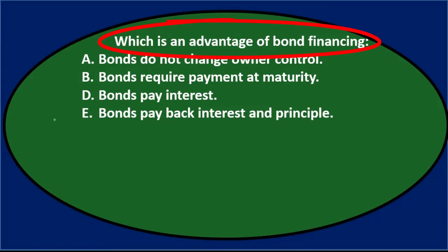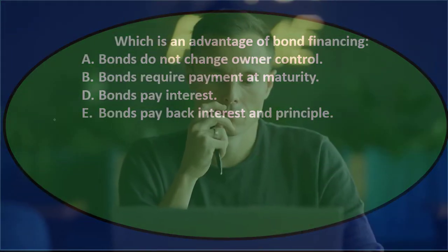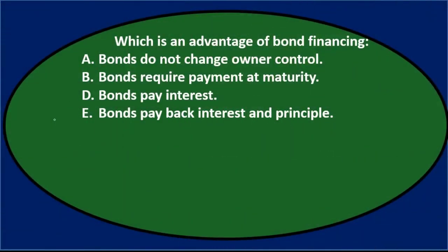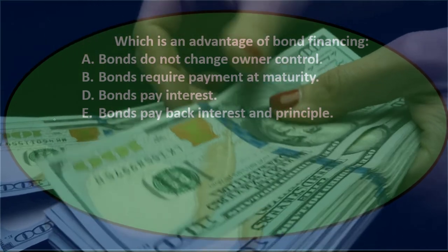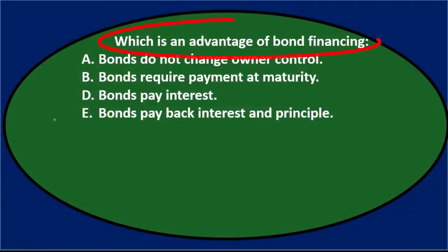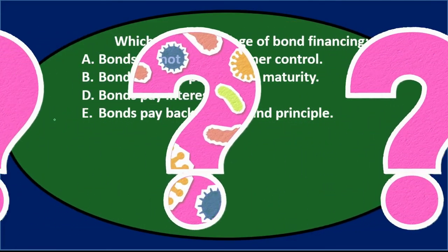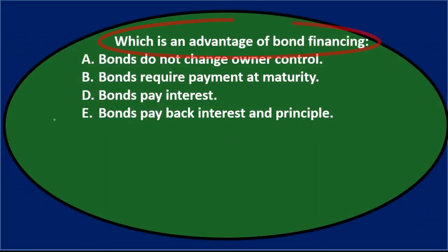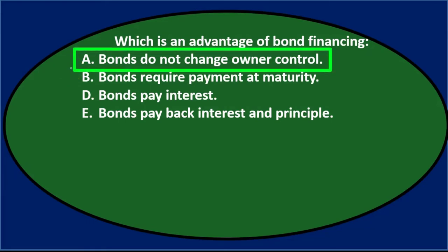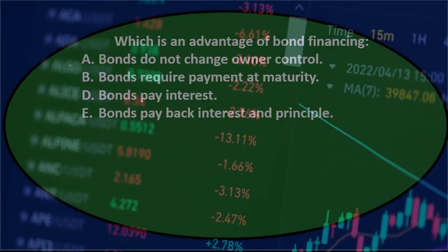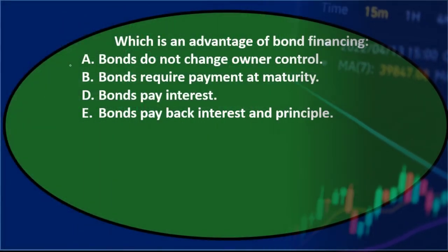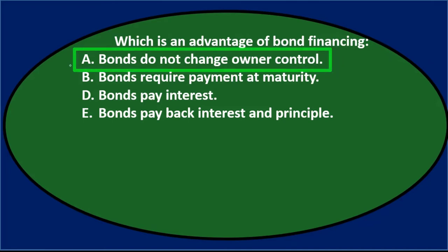When thinking about advantages and disadvantages of bonds, you need to contrast them to other financing options. We sell bonds to get cash — but we could also issue stock or take out a loan. So advantages of bonds are really advantages compared to those alternatives. Option A — bonds do not change owner control — is true because unlike issuing stock, bondholders don't get control of the business.